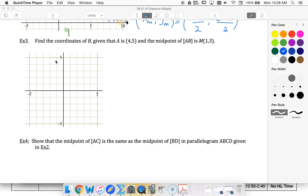All right, so now we're going to use our midpoint formula to find the coordinates of B, given that A is at (4, 5). So let's plot A. 4, 5 is up here. So there's my point A.